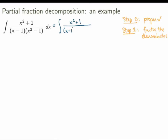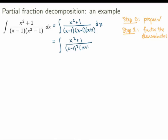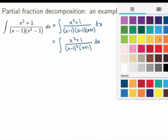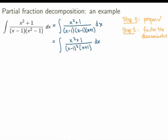So we need to do one step to factorize the denominator. We rewrite the denominator as x minus 1 times x minus 1 times x plus 1. Now it is in factorized form, but there are two of the same factor, so we can combine them as x minus 1 squared times x plus 1. This is the denominator in factorized form.